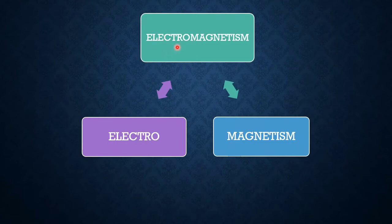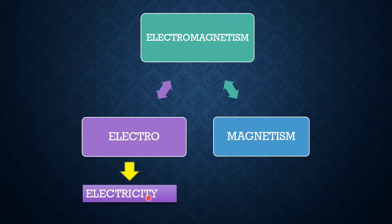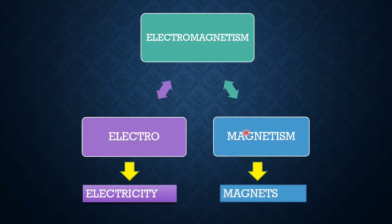Electromagnetism. Divide this word into two parts: electro and magnetism. Electro basically means electricity, and magnetism is totally about magnets.